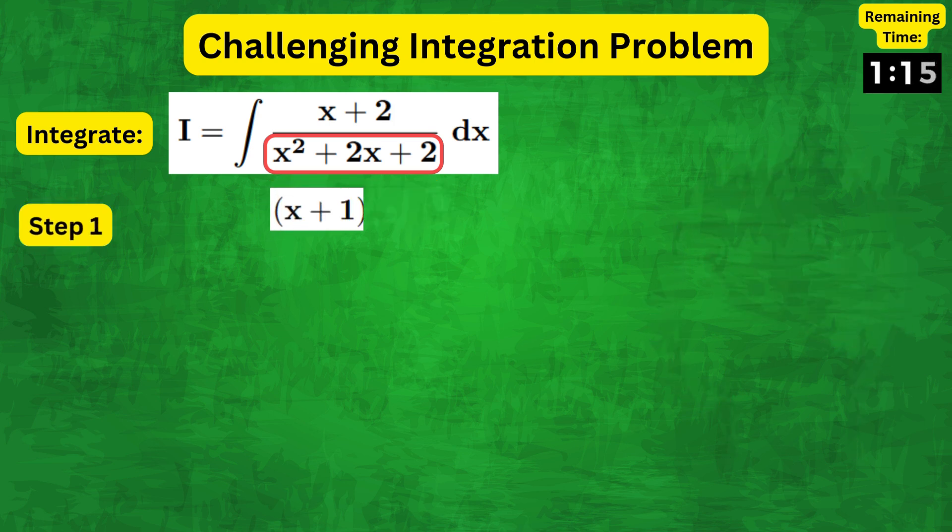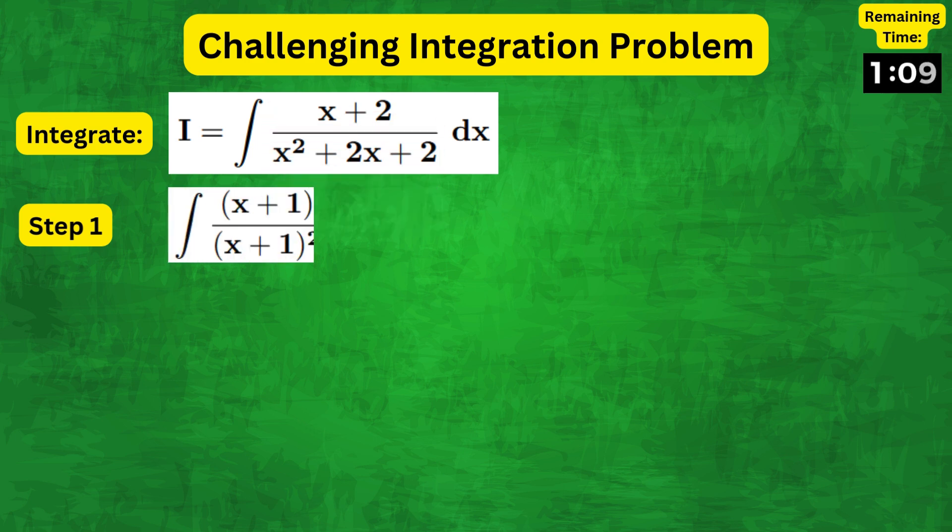However, we can complete the square to write the denominator as follows. Therefore the integral can be written as x plus one plus one over x plus one squared plus one.